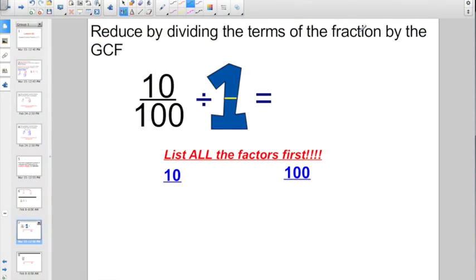Let's try this one. Reduce by dividing the terms of the fraction by the greatest common factor. If you're not sure, go and list all the factors first. But, just pretend that I know that the greatest common factor would be 10. Did everybody catch that in their mind or are you thinking, oh, we'll just go ahead and use 2, Mr. Heinz? Nope. 10 divided by 10, that's going to give me 1. A hundred divided by 10, that's going to give me 10. So, 10 hundredths reduced to its lowest terms would be one-tenth.